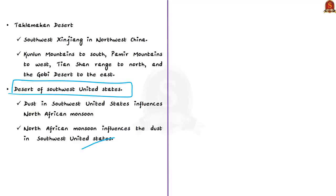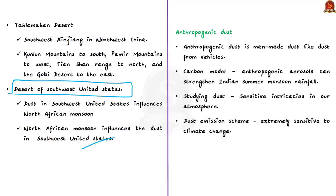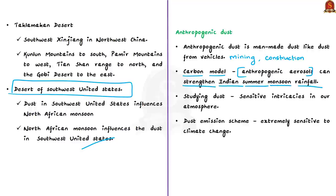Regarding man-made dust, some studies found that anthropogenic aerosols can decrease monsoon precipitation, while other studies found that absorbing anthropogenic aerosols can strengthen monsoon circulation. Anthropogenic dust includes dust from vehicles, mining, and construction activities. Researchers used a carbon model to simulate the impact of anthropogenic aerosols on the Indian summer monsoon. Results showed these aerosols can strengthen Indian summer monsoon rainfall, published in the journal Earth Science Reviews.